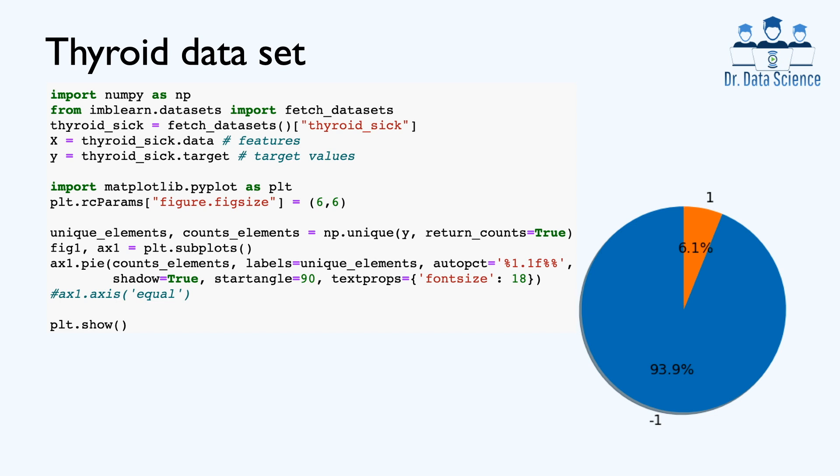When you want to train a classifier, the first step is to understand the number of samples in each class. We can do so by using np.unique and passing the 1D array of target values or labels, which is called Y here. After finding count elements, which contains the number of samples in each category, you can create a nice plot using the pi plot in Matplot.ly. We notice that the majority class has about 94% of samples, and the minority group contains only about 6% of the total number of samples.